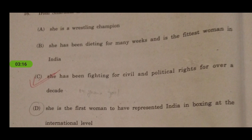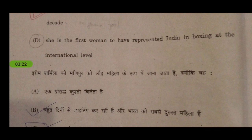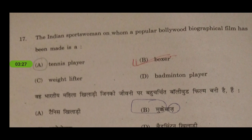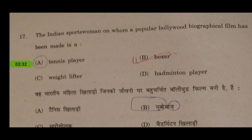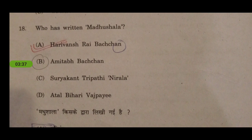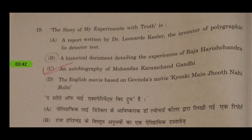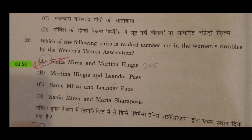Next: the Indian sportsman on whom a popular Bollywood biographical film has been made is a boxer. Madhushala is written by Harivansh Rai Bachchan. The Story of My Experiments with the Truth is the autobiography of Mohandas Karamchand Gandhi. Next: which of the following pairs is ranked number one in women's doubles by the Women's Tennis Association? The answer — a 2015 question — is Sania Mirza and Martina Hingis.